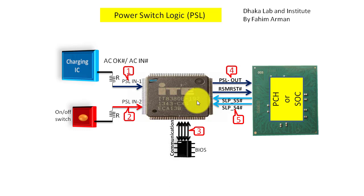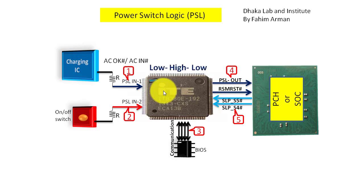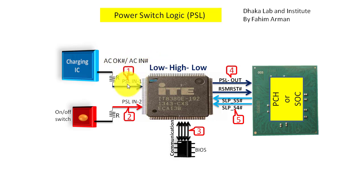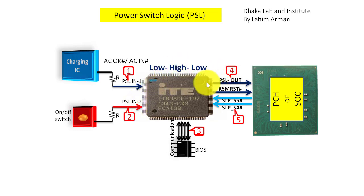Now I will make you understand how this logic works. Inside the IO chip there is a comparator that works like this: low, high, low. As I told you, first AC_OK# or AC_IN# signal will be low, so PSL_IN1 will be low. Then PSL_IN2 will be 3.3 volts, meaning it will be high. Then the output — PSL_OUT — is low.